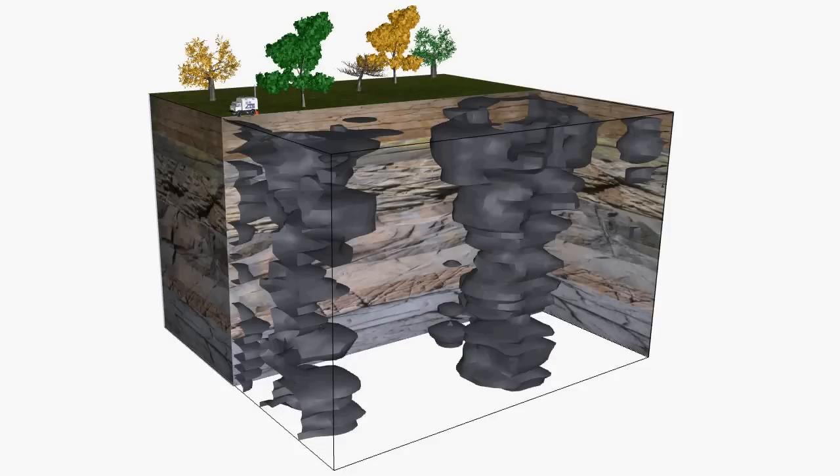Electro-seismic data can also be used to find and define subsurface geological structural information, such as the shape and position of fault lines or intrusive structures. An example of this is shown.